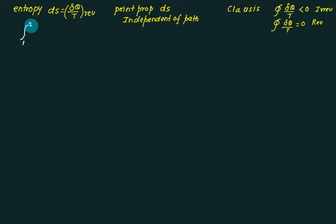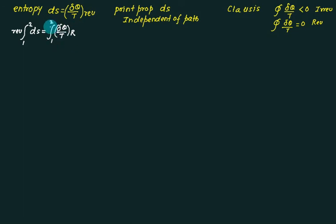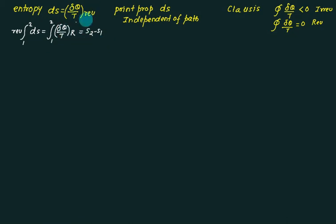Suppose we have state 1 going to state 2, and the process is reversible. We want to integrate this. Then this integral is very well defined — it is the integral of δQ/T for a reversible process from 1 to 2, and the value of this integral is S₂ minus S₁. So today we want to define this for an irreversible process. Reversible is already defined, so what is the meaning for irreversible? How are you going to define the entropy change for irreversible?